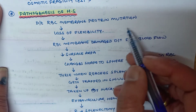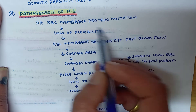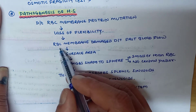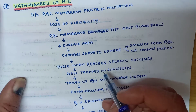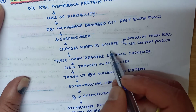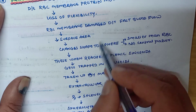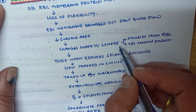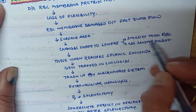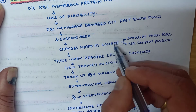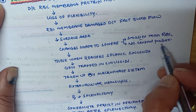In the pathogenesis of hereditary spherocytosis, mutation in RBC membrane protein causes loss of flexibility, leading to increased RBC membrane damage. The RBC changes its shape into a sphere, forming spherocytes. These spherocytes have a small surface area — lower than normal RBC — and they are smaller than the RBC with no central pallor.